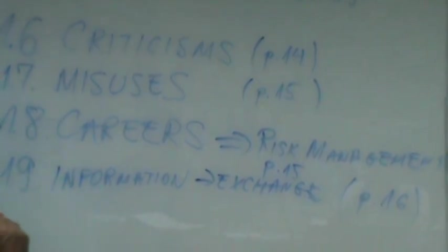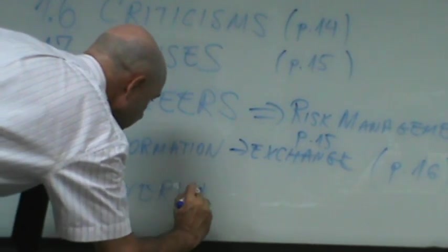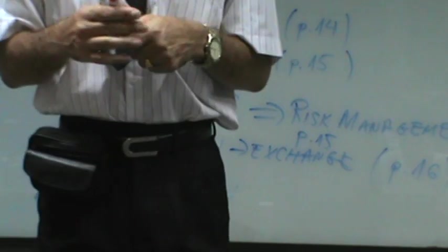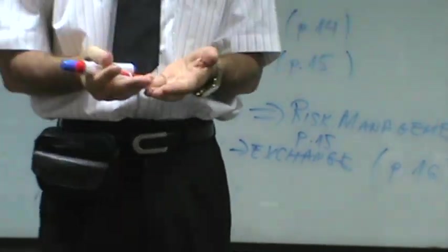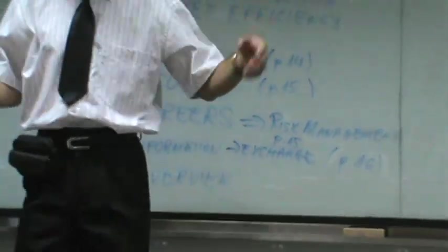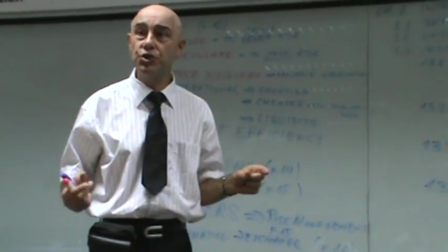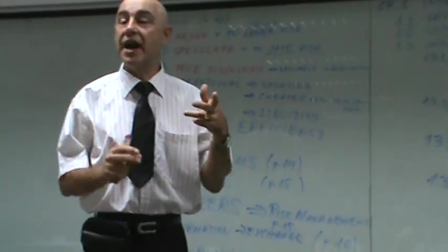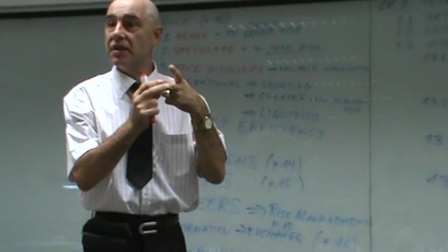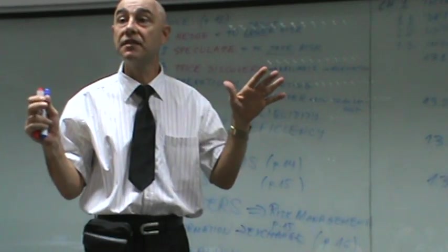Finally, for the course overview, chapter one is an introduction. Chapters two through seven cover options. Chapters eight through eleven cover forwards and futures. And if we have time, we'll have one or two concluding chapters on advanced strategies, techniques, and maybe credit derivatives.